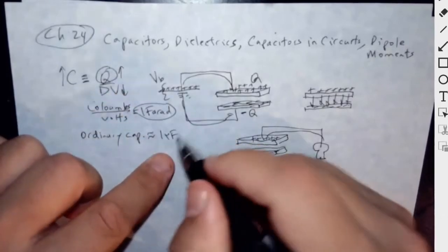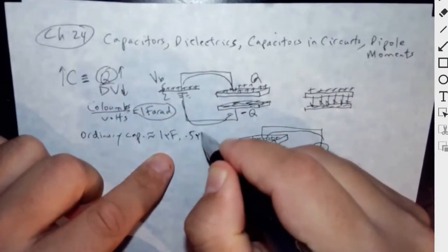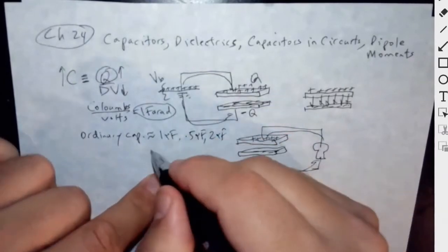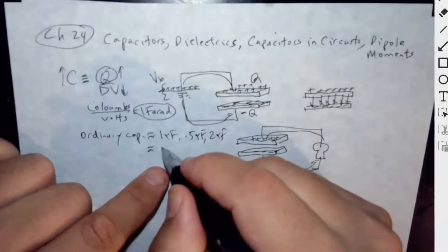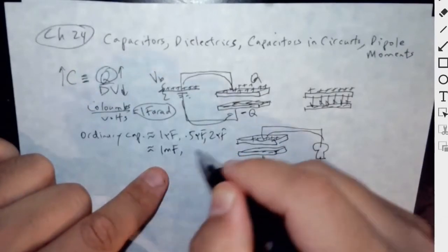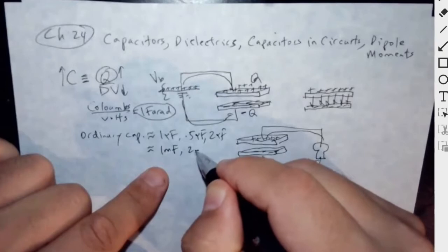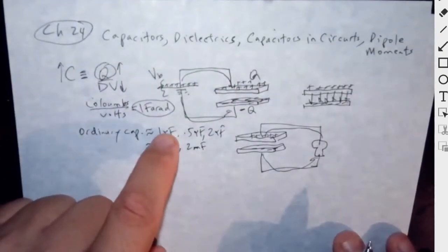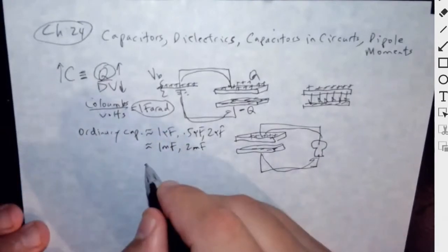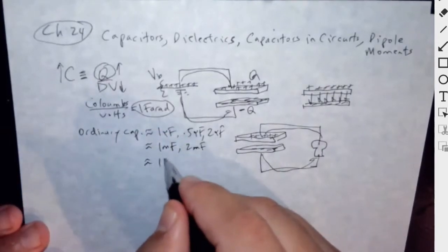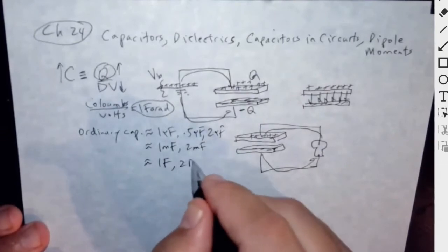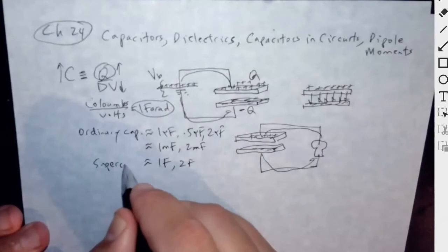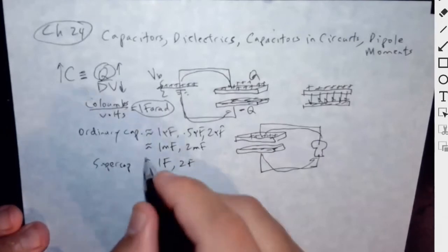Ordinary capacitors might be 0.5 micro-Farads or 2 micro-Farads, or you could have milli-Farad capacitors — those are stronger. One milli-Farad, two milli-Farads — those would be a thousand times stronger. And then you have ones called supercapacitors: one Farad, two Farads. Those use a slightly different technology.